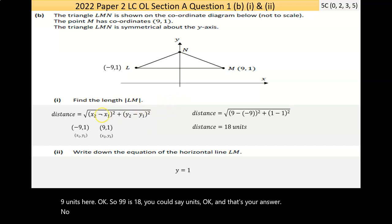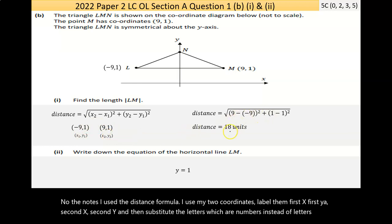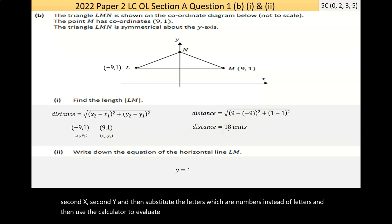Label them first x, first y, second x, second y, and then substitute the letters, which are numbers instead of letters, and then use the calculator to evaluate 18 units, which is an awful lot more work than I needed to do. But, so be it. When I made these notes, that's the way I thought of doing it at that particular time.